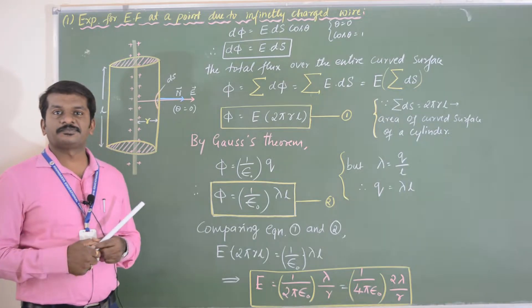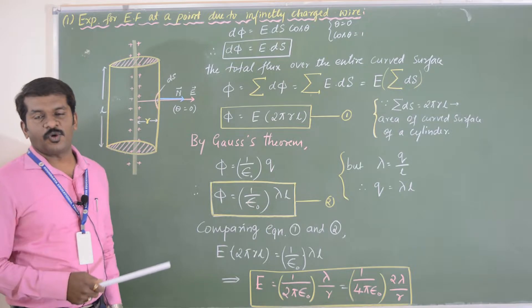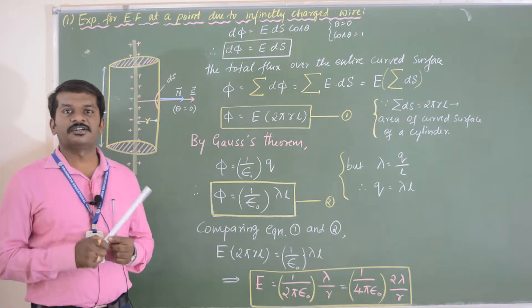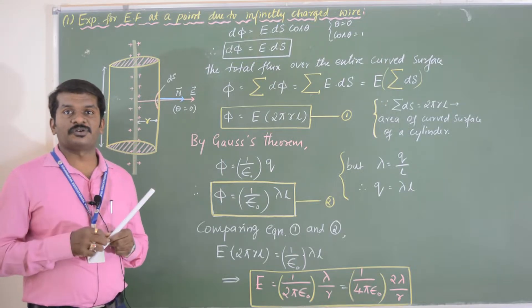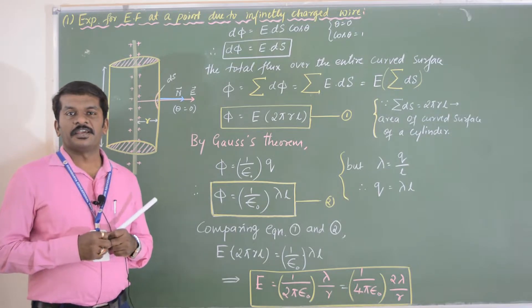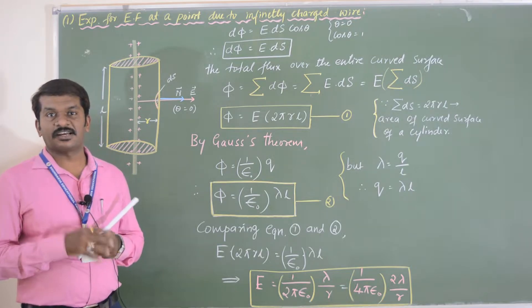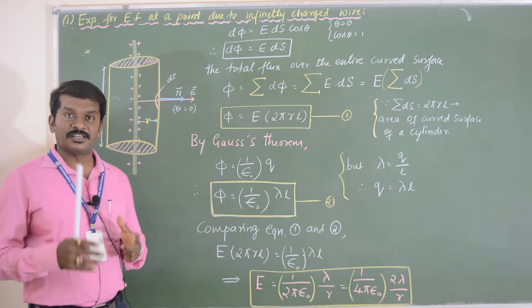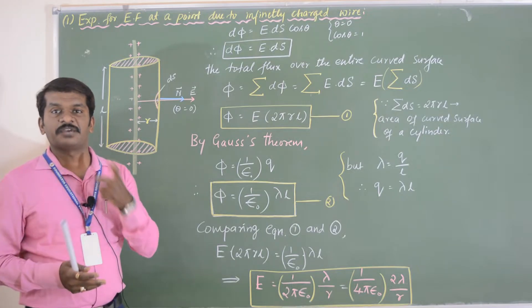According to Gauss theorem, it states that the total electric flux over any closed surface is equal to 1 by epsilon naught times the total charge enclosed by that surface. We also need to know about the Gaussian surface — it is a hypothetical closed surface of any shape and size considered in an electric field.